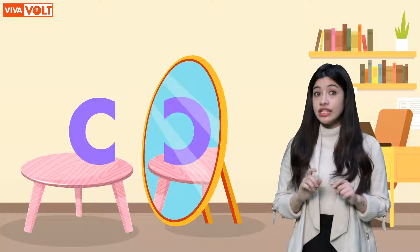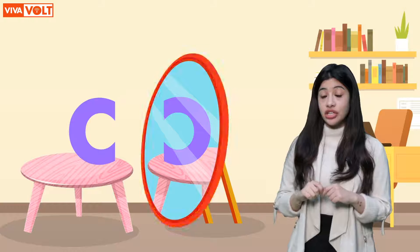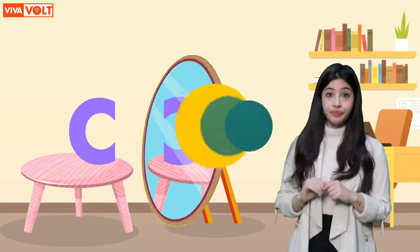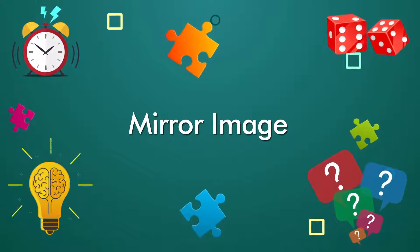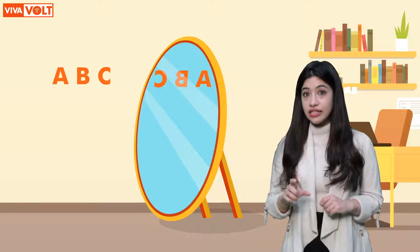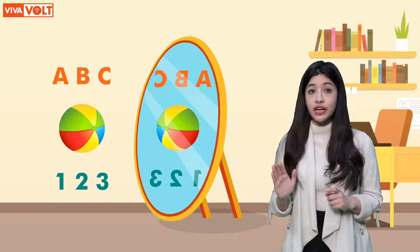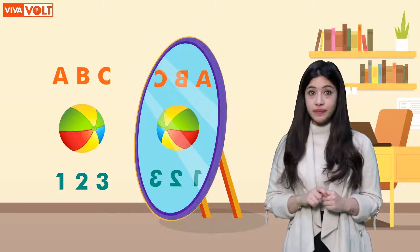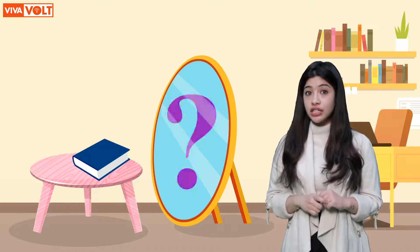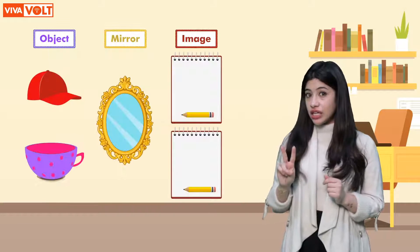Look at the letter C kept in front of the mirror. The image of this letter is formed in the mirror, and this image is called the mirror image. The image of a letter, an object, or a number as observed in the mirror is called a mirror image. You can keep an object in front of a mirror and observe how it appears.